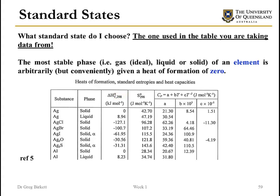An important thing to note in tabulated data — as we see with silver here — is that the standard heat of formation of an element in its most stable form is zero. So silver at 298 Kelvin is a solid, and its heat of formation is 0. It is also possible to define a heat of formation for a non-stable phase — for example, liquid silver at 298 Kelvin. Even though it can't exist in real life, we can still calculate what it would take to form a liquid at that temperature.